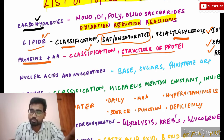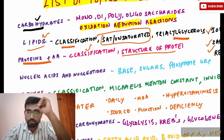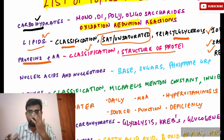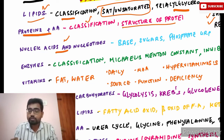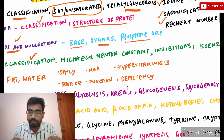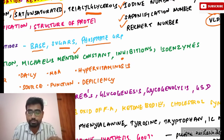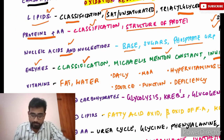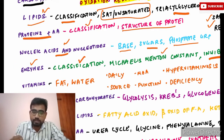Next, move to proteins and amino acids. Read about the classifications, the structure of proteins — primary, secondary, tertiary, and quaternary structures — and the bonds involved. Then cover nucleic acids and nucleotides: base sugars and phosphate groups. Enzymes are a very important topic: read about the classification of enzymes, Michaelis-Menten constant, inhibitions — competitive and non-competitive — and isoenzymes such as lactate dehydrogenase.